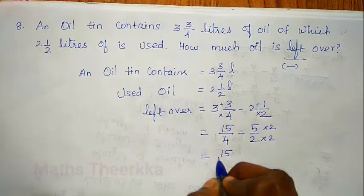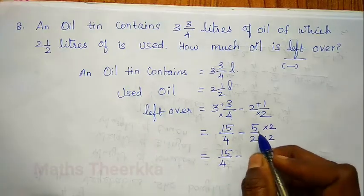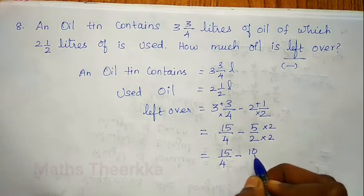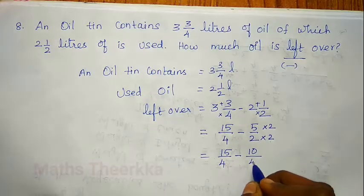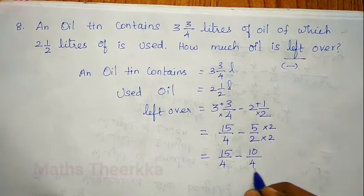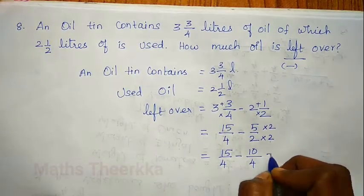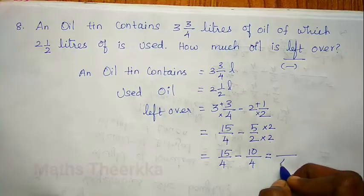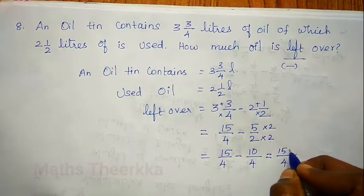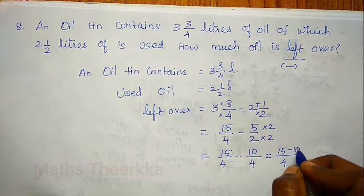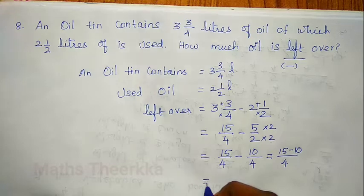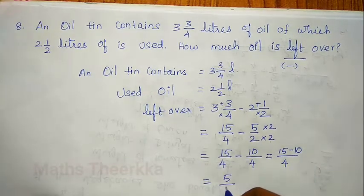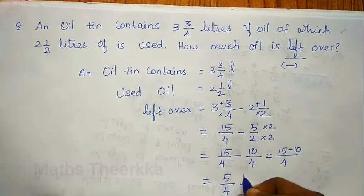We have 15 by 4 minus 5 by 2. The denominator is not common, so we multiply: 5 by 2 becomes 10 by 4. So 15 minus 10 with denominator 4. The answer is 5 by 4 liters remaining.